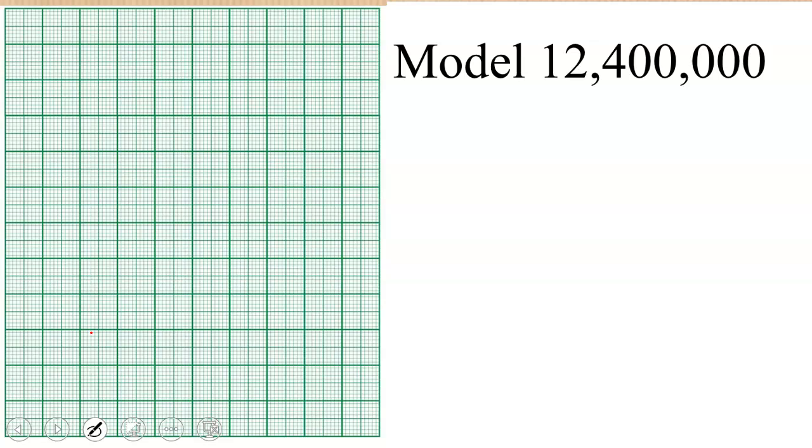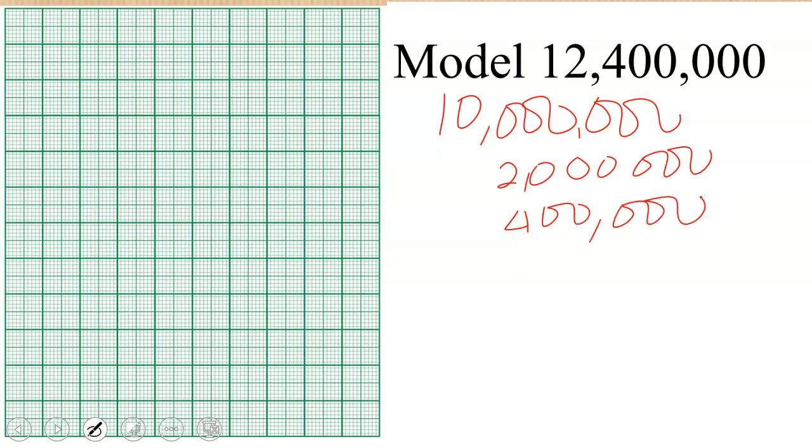Then we have 2 million, then we have 400,000. So these are the facts. Remember we said the beginning small gives us 100,000. So we have 1 million and then we have 10 million as well.